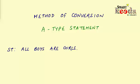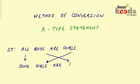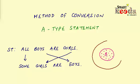If you try to convert this A-type statement and get a definite conclusion out of it, the changes will be: the quantifier 'all' becomes 'some,' and the classes get interchanged. So the conclusion will be: some girls are boys. Let's understand this with a diagram — here is the circle of boys, represented by dots, and here is the circle of girls, represented by lines.